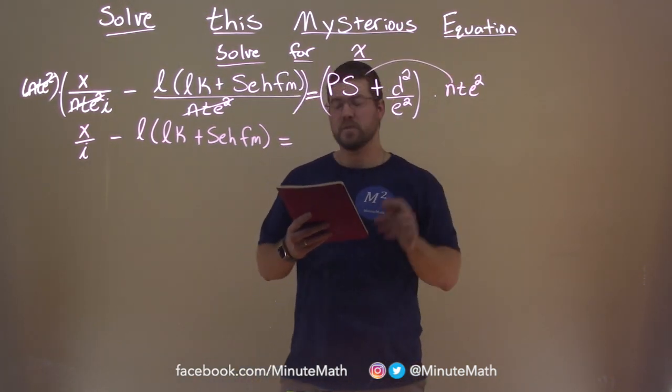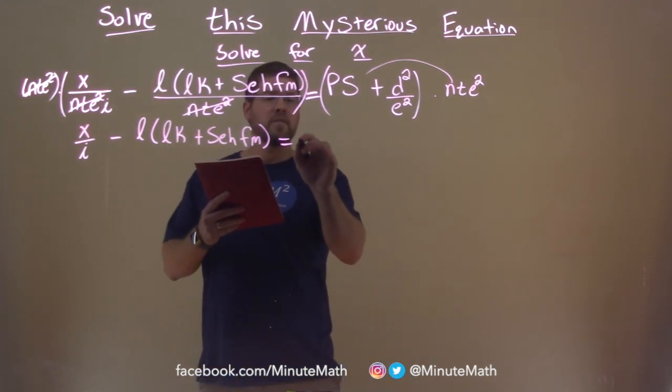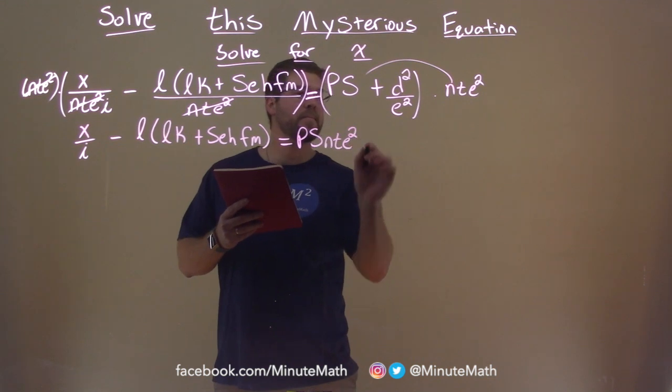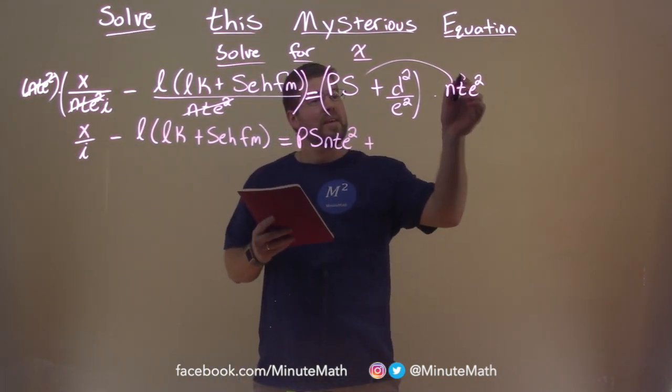So we distribute the nte squared to the ps. So we're left with ps nte squared. Plus, now we distribute this here.